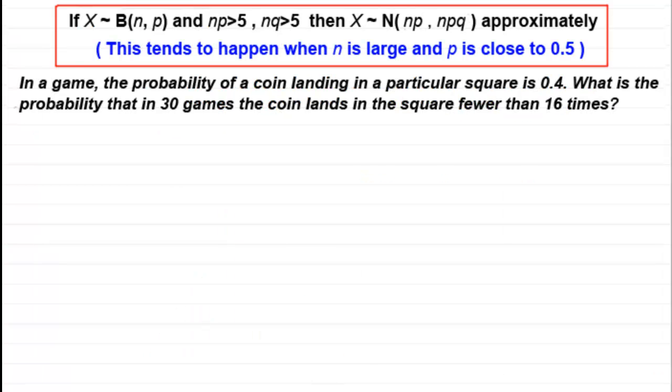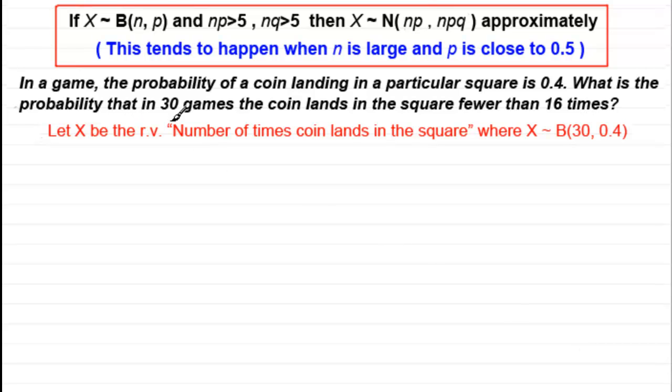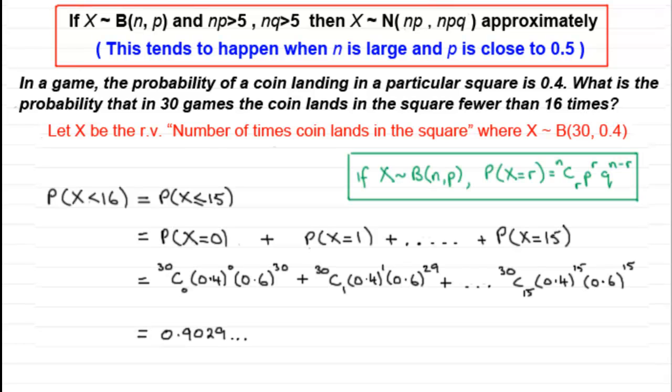What I've got here is that in a game the probability of a coin landing in a particular square is 0.4. So what is the probability that in 30 games the coin lands in the square fewer than 16 times? So if I was just doing this normally without any form of approximation, what I'd do is define a random variable. I'd say let X be the random variable number of times the coin lands in the square where X is distributed binomially and n is 30 and the probability of success is 0.4.